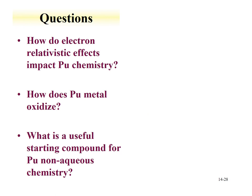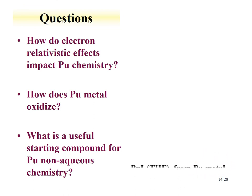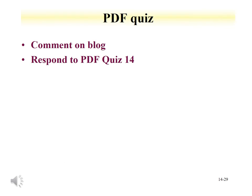A useful starting compound for plutonium non-aqueous chemistry is the tetrahydrofuran compound of plutonium triiodide — a lower oxidation state plutonium species that can be readily made from plutonium metal. When you've completed this third and final lecture on plutonium, please respond to the PDF quiz and comment on the blog.